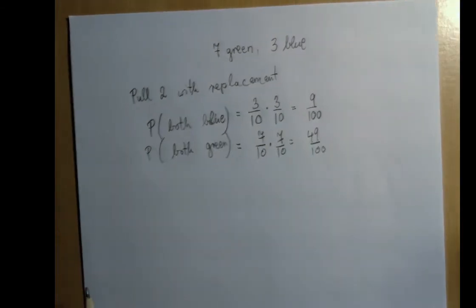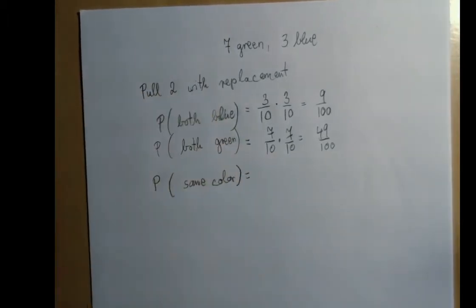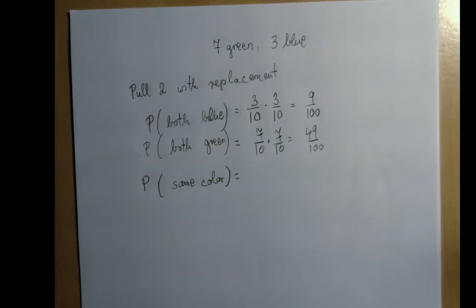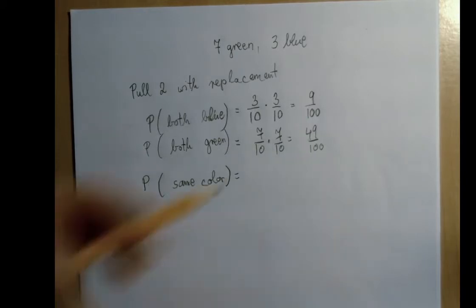Now the next question is, what is the probability that they have the same color? Well, if we have 100 cases, then 9 times it's going to be both blue, and 49 times it's going to be both green. So we add these two.